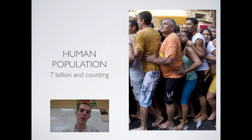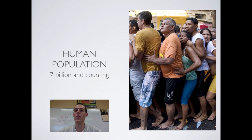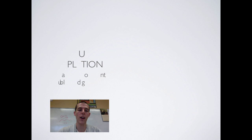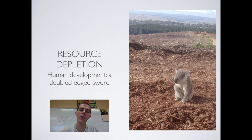A larger human population means greater demand for resources, and that greater demand puts more strain on the Earth. As there are more people on the Earth, more waste and more pollution are produced — things that have to be dealt with as well. And there is one more environmental indicator: resource depletion itself.